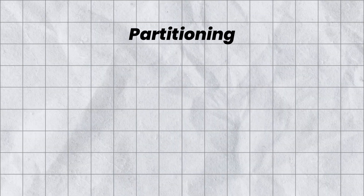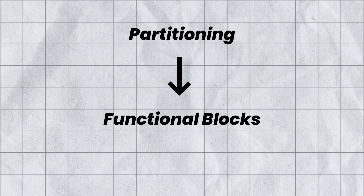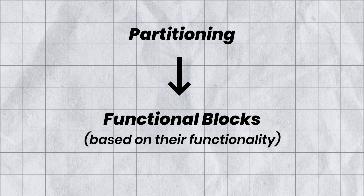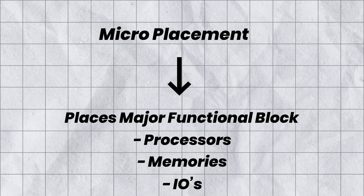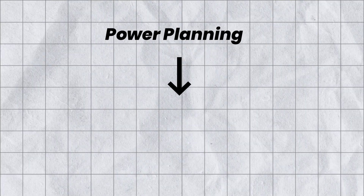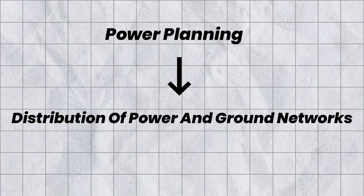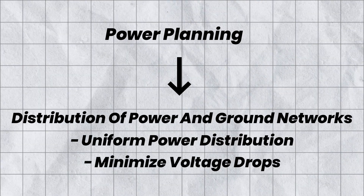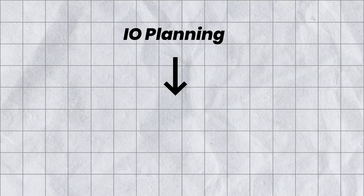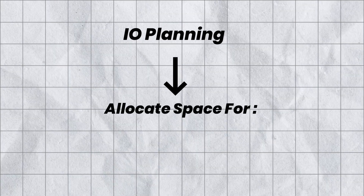In partitioning, we divide the circuit into functional blocks based on their functionalities. In macro placement, it places major functional blocks such as processors, memories, and IOs. In power planning, we plan the distribution of power and ground networks to ensure uniform power distribution and minimize voltage drops. In IO planning, we allocate space for input and output pads and bond pads.